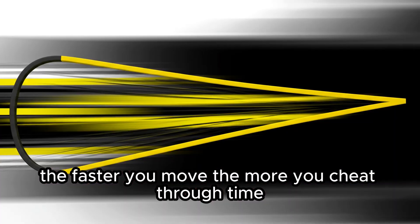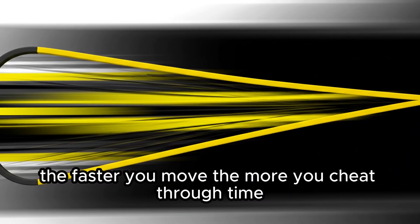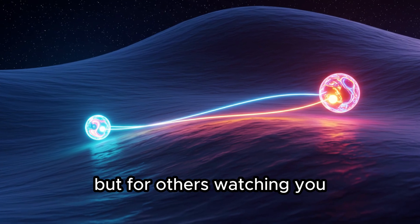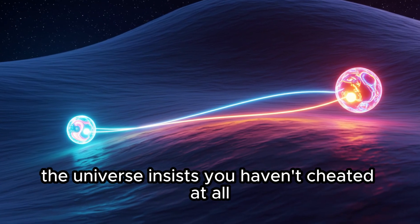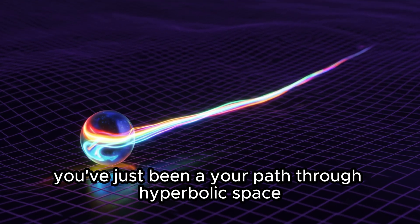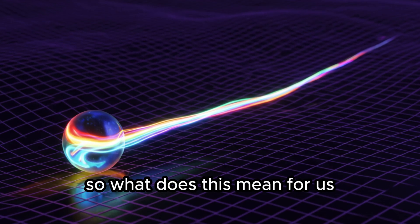It also explains why time dilation occurs. The faster you move, the more you cheat through time. For you, the clock ticks slower. But for others watching you, the universe insists you haven't cheated at all. You've just bent your path through hyperbolic space.